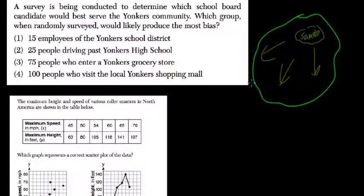Let's see which of these groups are not representative of the entire community. Fifteen employees of the school district, that's really going to be biased because everyone is going to only be working at the school. So their influences will be driven by the school, not by everything the community needs.